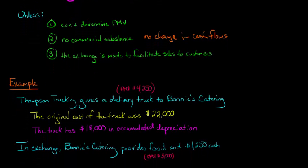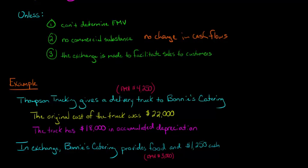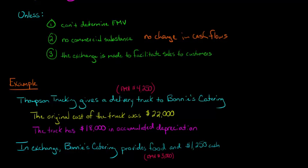So what is Thompson getting in exchange? They're giving up a truck worth $4,250 to this catering company. Well, in exchange, the catering company says they will provide food to the company picnic for Thompson Trucking — they're going to cater that picnic. That food has a fair market value of about $3,000. And that's short, so now they've got $3,000 of food but they're getting a $4,250 truck, so they'll also give $1,250 cash. The fair market value of cash is just $1,250. Basically, we've got $4,250 worth of fair market value of assets going in exchange for another $4,250 in assets.